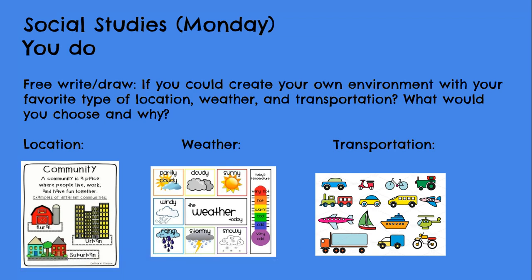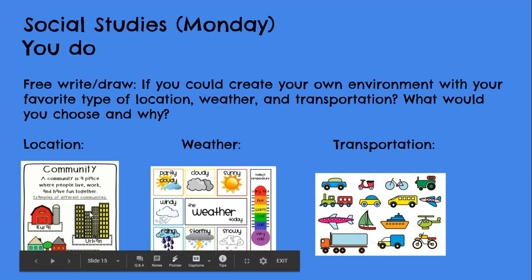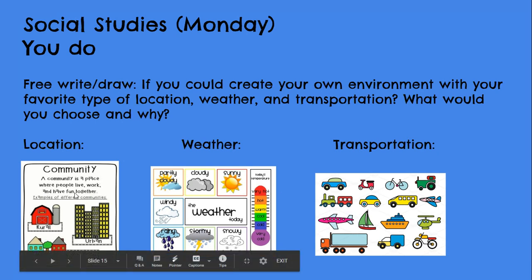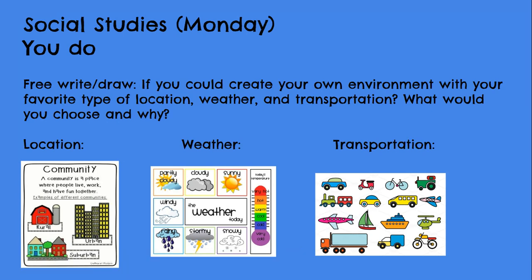Here's your task for today. We learned about community and environments on Monday, weather on Tuesday, and today we learned about transportation. Your goal is to write and draw about your own location, weather, and transportation. Pick your location — whether it's rural (like country and farmland), urban (like big cities like Charlotte with tall buildings), or suburban (like a small community with lots of houses but not filled with tall buildings).